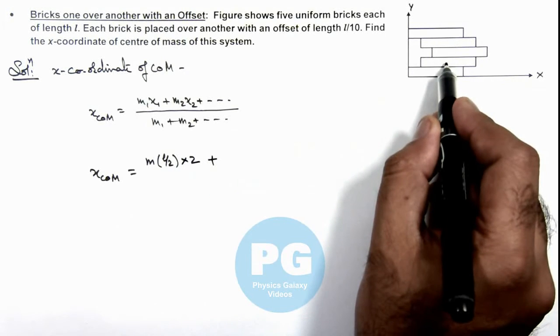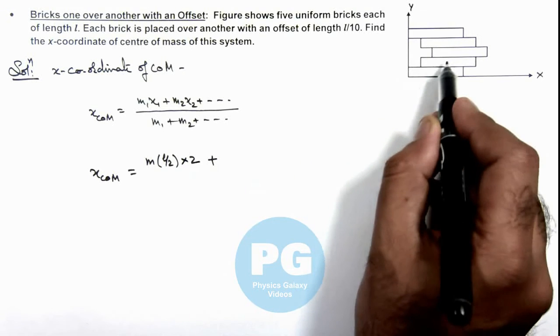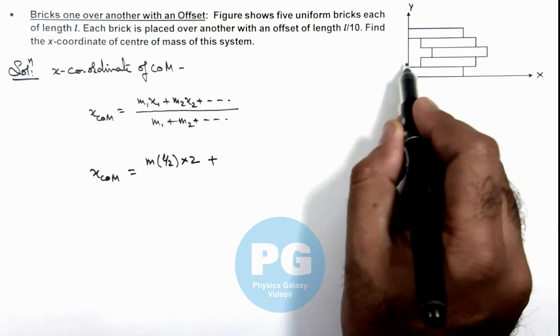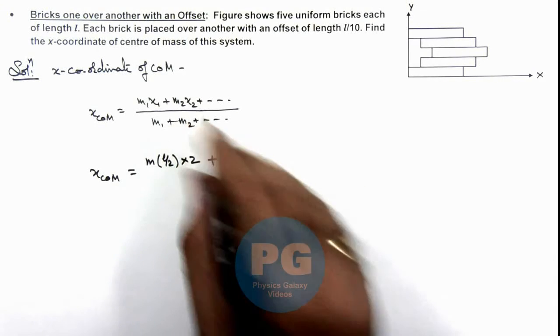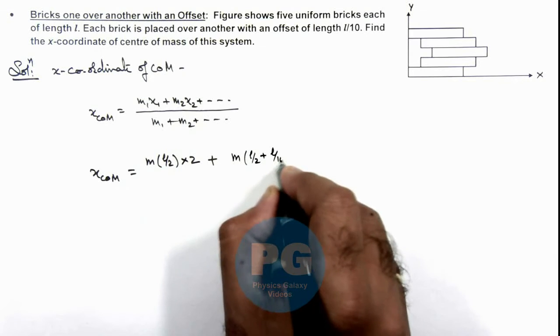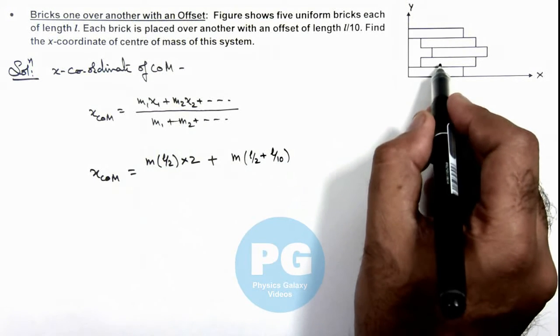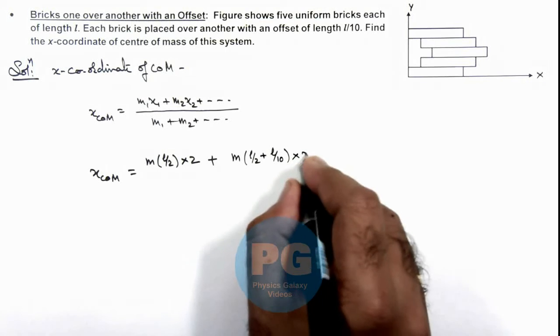Plus for the second plate, it is displaced by a distance l by 10. Its center of mass is at a distance l by 2 plus l by 10. So we can write m2 x2 as m multiplied by l by 2 plus l by 10. Again the same is valid for the fourth brick, so we can again multiply it by 2.